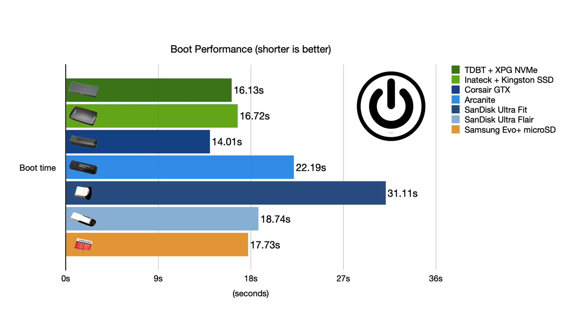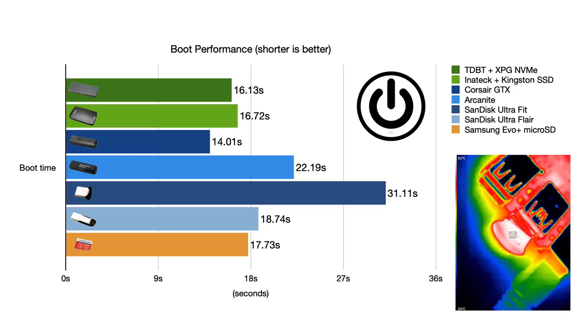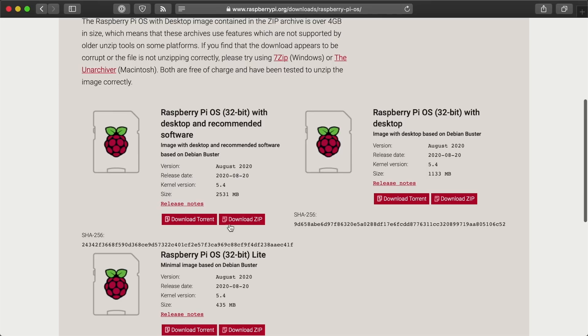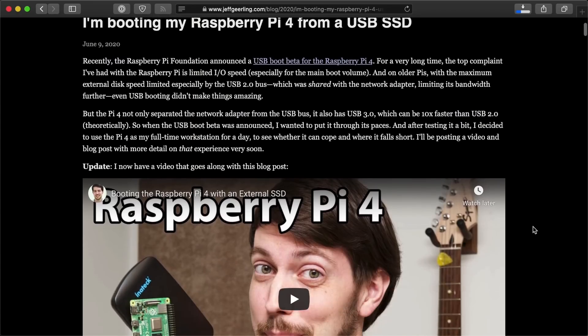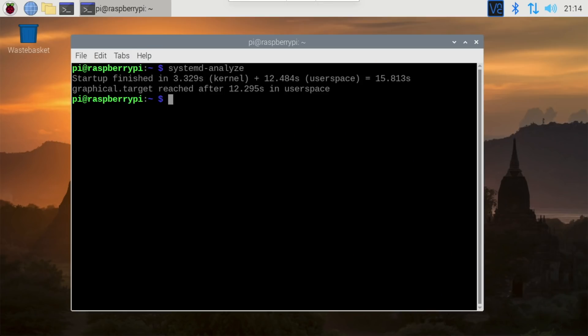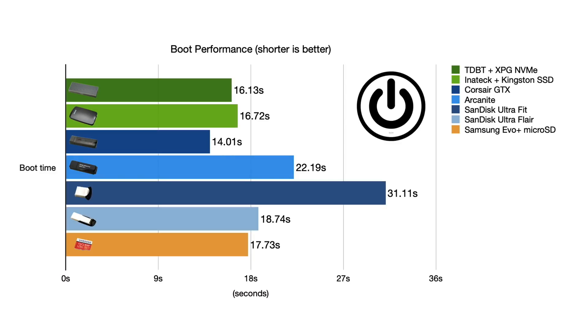All the drives performed pretty well, though the non-UASP drives did tend to be a little slower, with the strange exception of the SanDisk Ultra Flare. The slowest by far was the SanDisk UltraFit, which has a tendency to overheat and slow way down. There are two important caveats: I booted with the August 2020 version of Raspberry Pi OS, and it seems like the Pi already optimizes its boot performance really well. The first boot was always a bit slower, but subsequent boots took around 15 to 17 seconds on all the USB drives I tested.